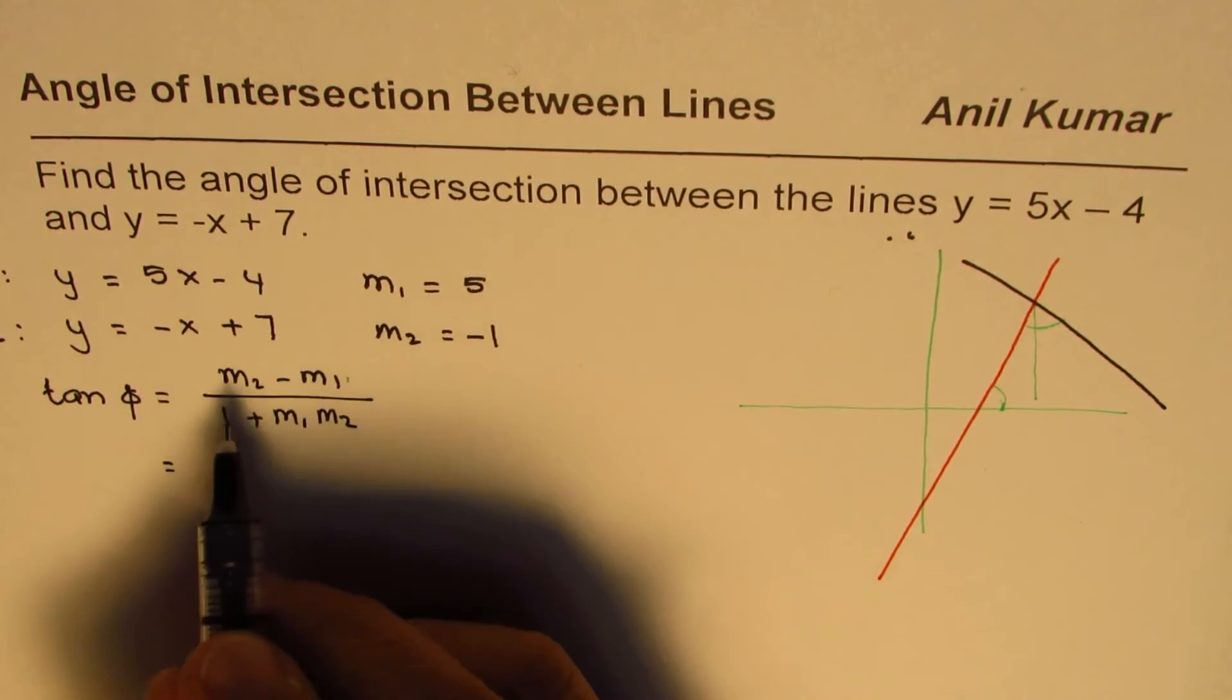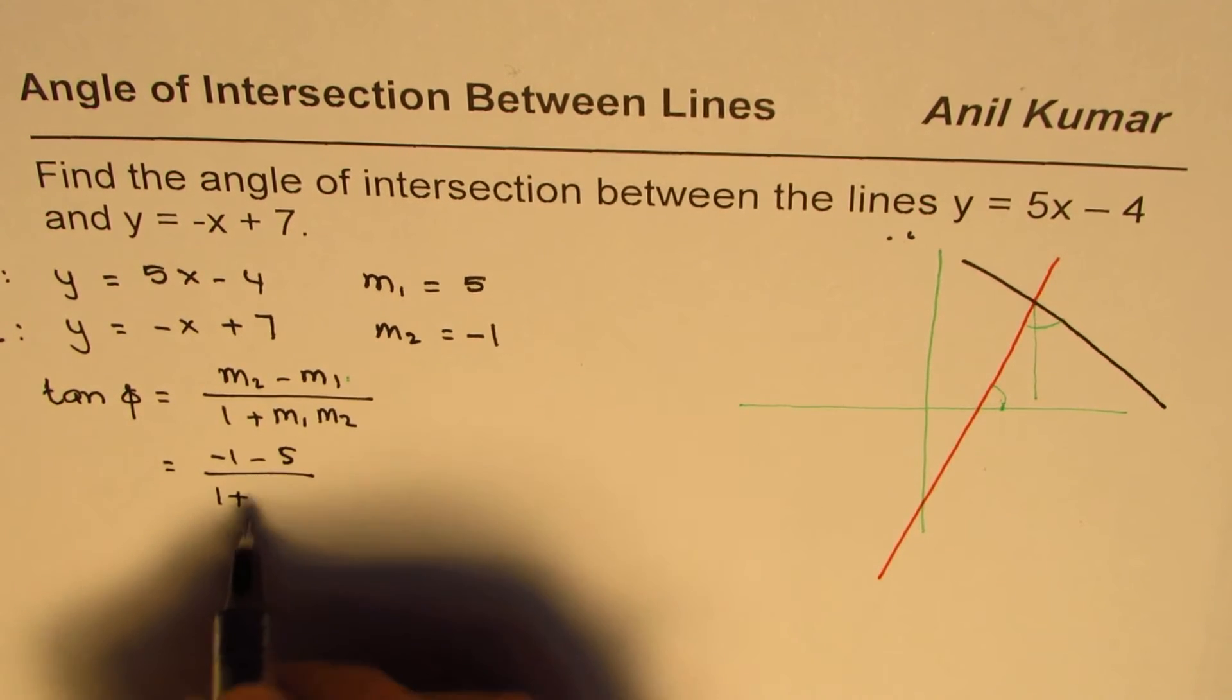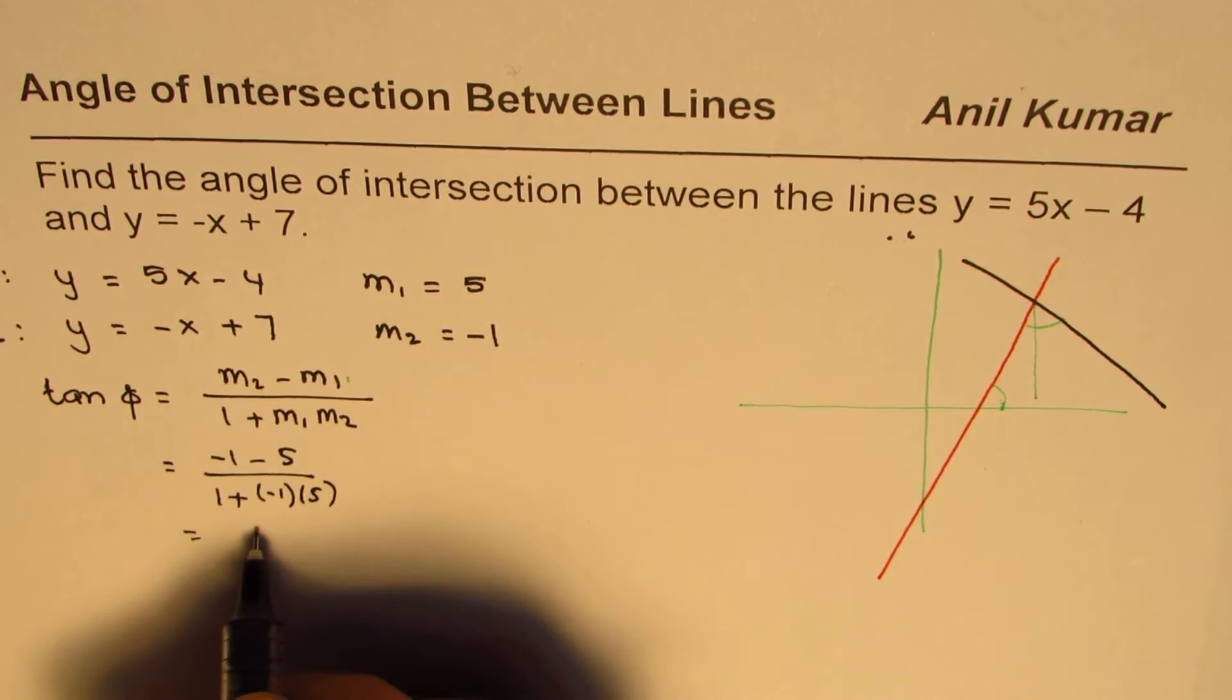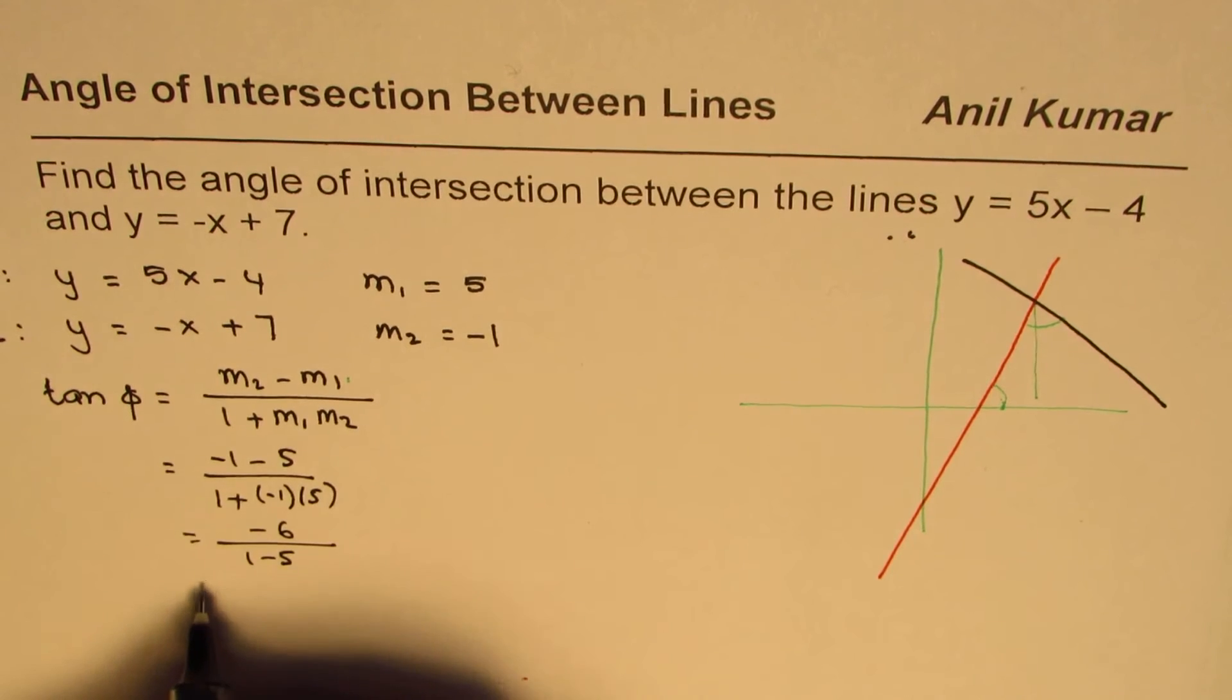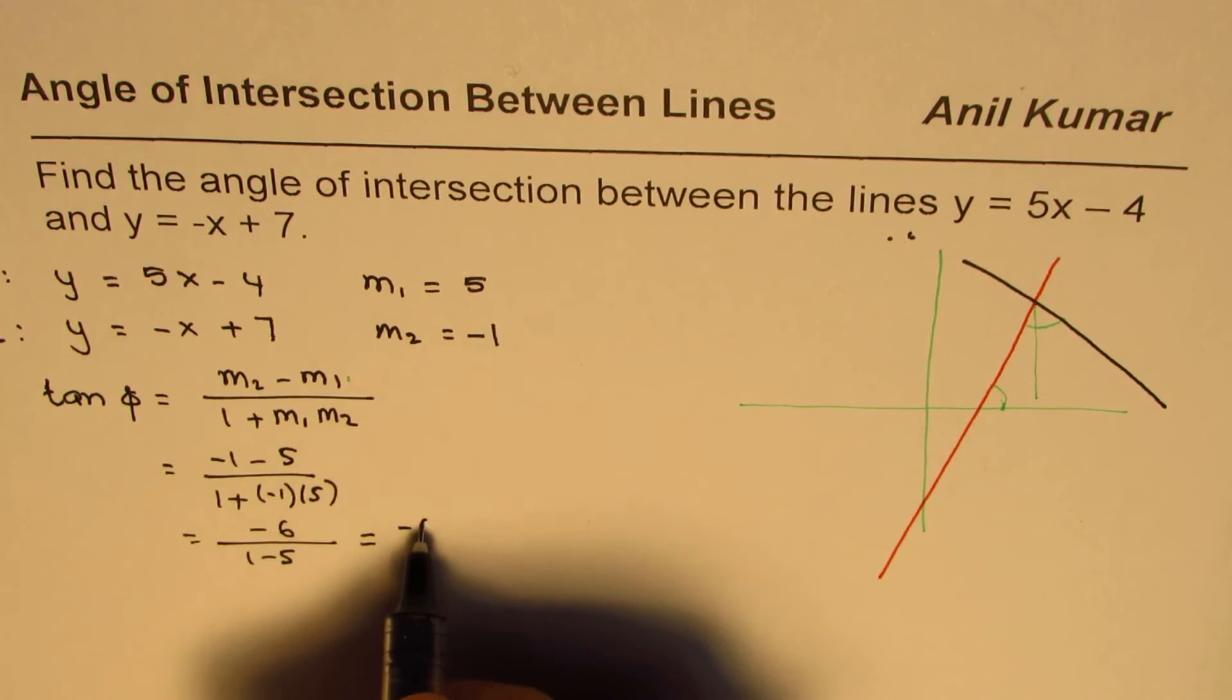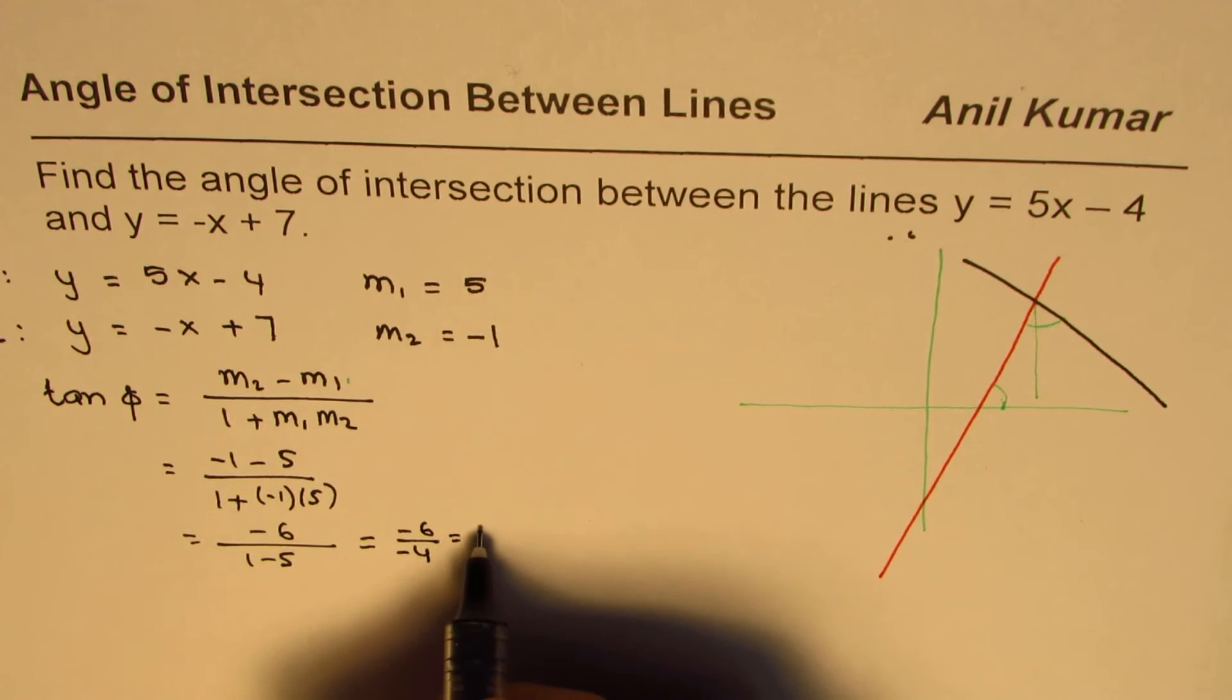What we have here is m2 is minus 1, minus m1 is 5 divided by 1 plus minus 1 times 5 and that gives us minus 6 divided by 1 plus 1 minus 5. 1 minus 5 and that is equal to, this is also negative, so it is minus 6 over minus 4. So it could be written as equal to 3 over 2.